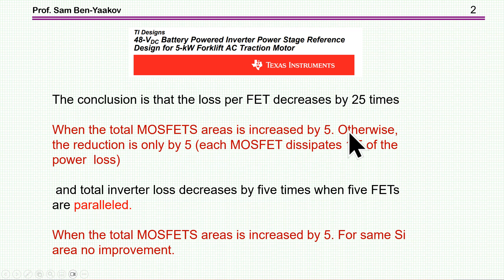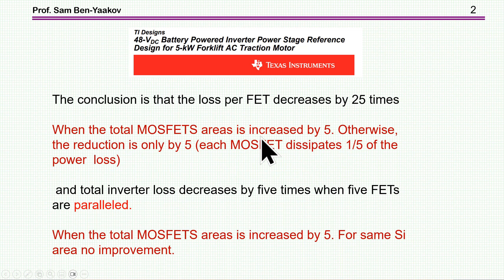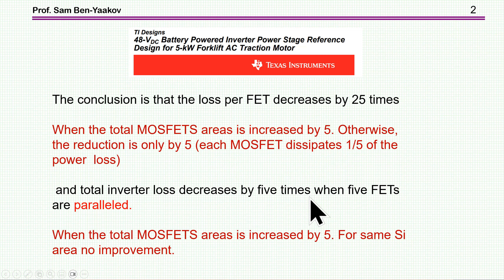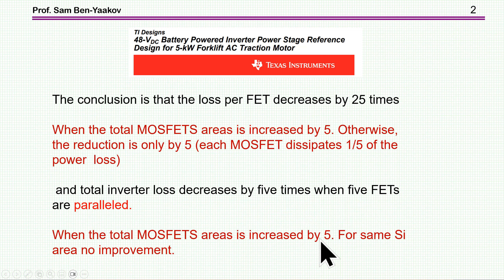My comment is that this is correct when the total MOSFET area is increased by 5. Otherwise, if it is the same silicon area, the reduction is only by 5. There is another conclusion that the total inverter loss decreases by 5 times when 5 FETs are in parallel, and my comment is that this is correct if the area is increased by 5, but for the same silicon area, there is no improvement.